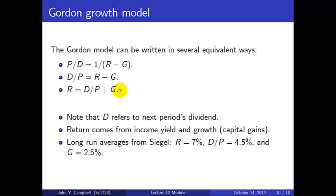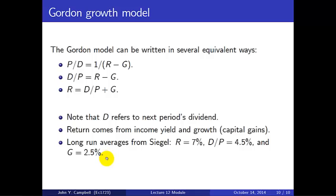In Jeremy Siegel's book, for example, he applies this formula and calculates long-run averages from historical US data. He finds the long-run historical average R to be about 7%, the dividend yield to be about 4.5%, and the growth rate to be about 2.5% — and indeed 7 equals 4.5 plus 2.5. Hopefully you'll see when we discuss it in lecture how useful this formula can be and the many applications it has.